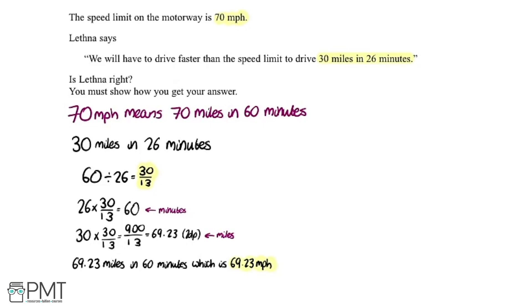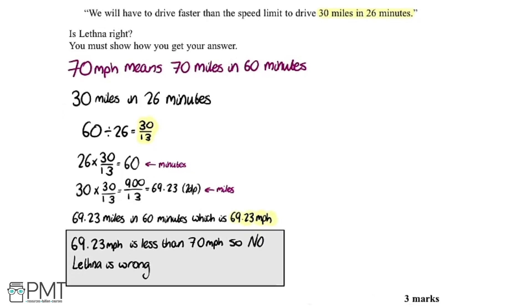So to get the mark we need to write there in some sort of conclusion. So I've written it as my conclusion here 69.23 miles an hour is less than 70 miles an hour so no Lettner is wrong.